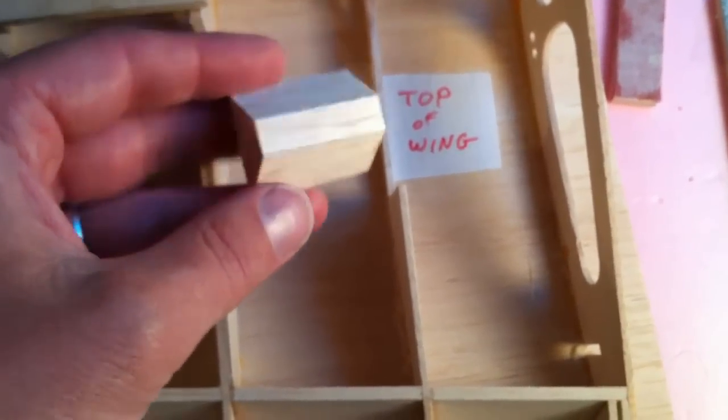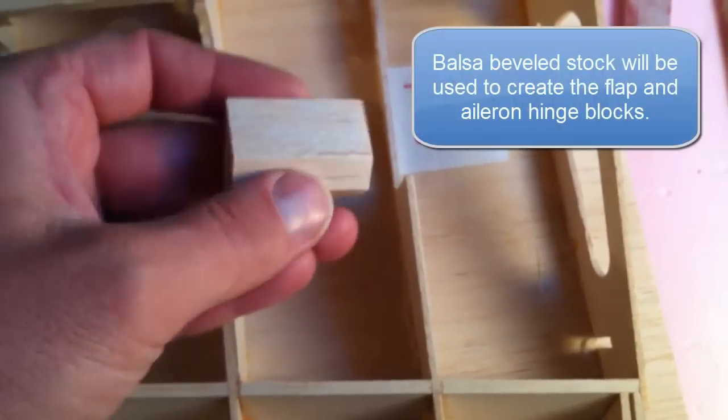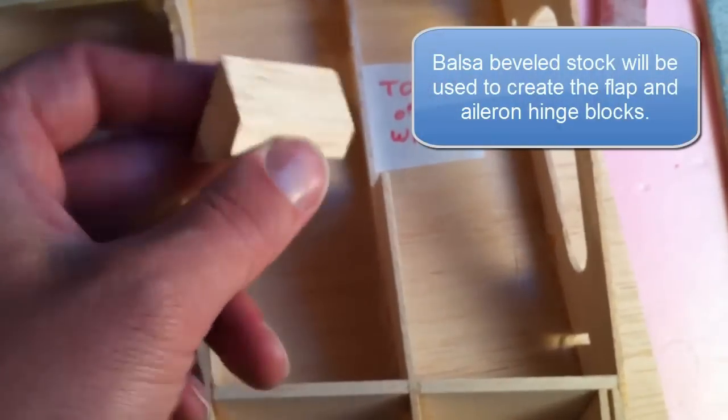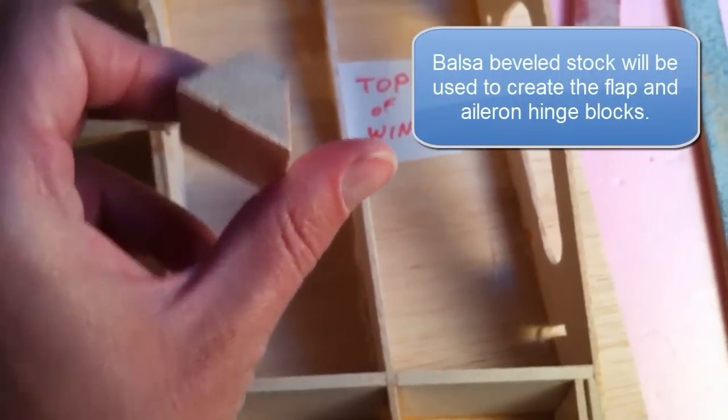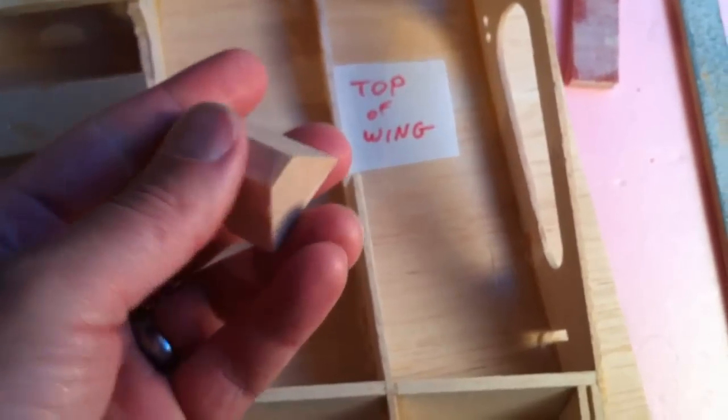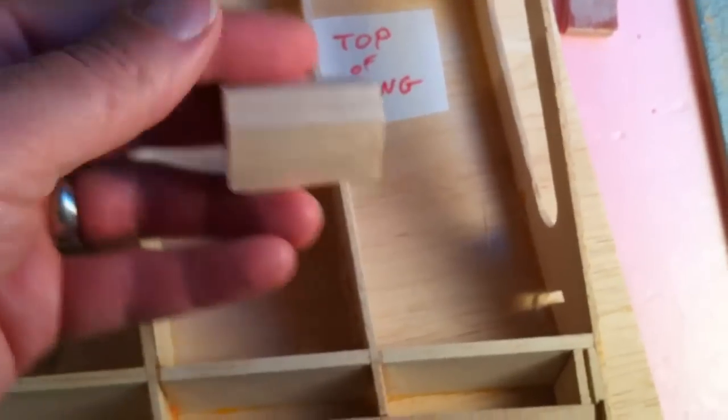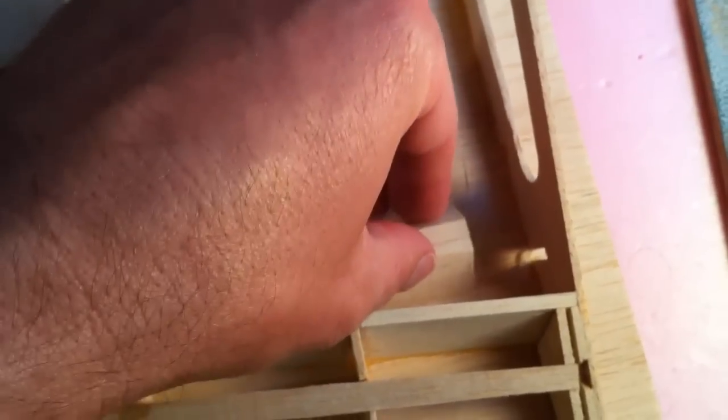Today I'm installing the flap hinge blocks. This was cut from a 9-inch long piece of beveled balsa stock. This is going to go in here against here.